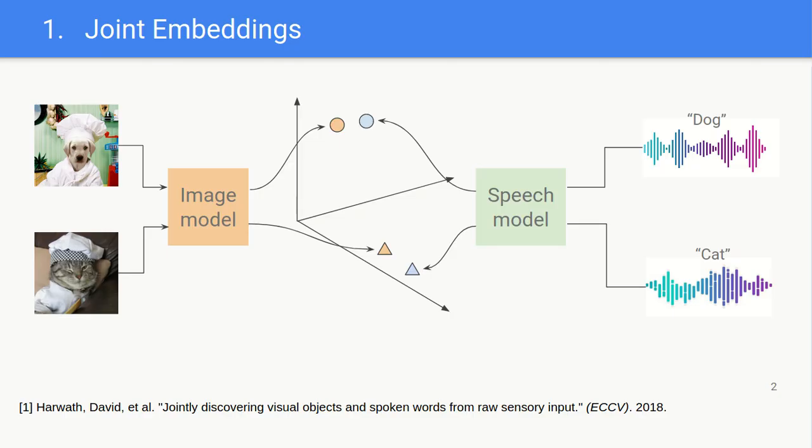Now first of all, what are joint embeddings? Joint embeddings are representation spaces trained with the objective of maximizing the similarity of corresponding signals in different modalities. For example, the image of a dog would be mapped by an image model into a similar or close point to where a speech model would map a speech signal of the word dog.